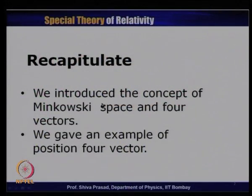We gave an example of a position four vector, where x, y, z are the three coordinates of an event and ict, where t is the time of that event in a given frame. These four quantities form the components of a four vector. We introduced the concept of Minkowski space and four vectors and gave an example of a position four vector.